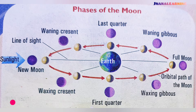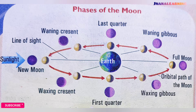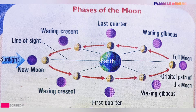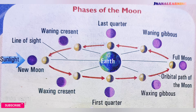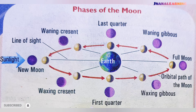As the moon travels from new moon to full moon, the illumination gradually increases, and it is called the waxing of the moon. When it moves from full moon to new moon, the lighted portion gradually decreases, and it is called the waning of the moon.